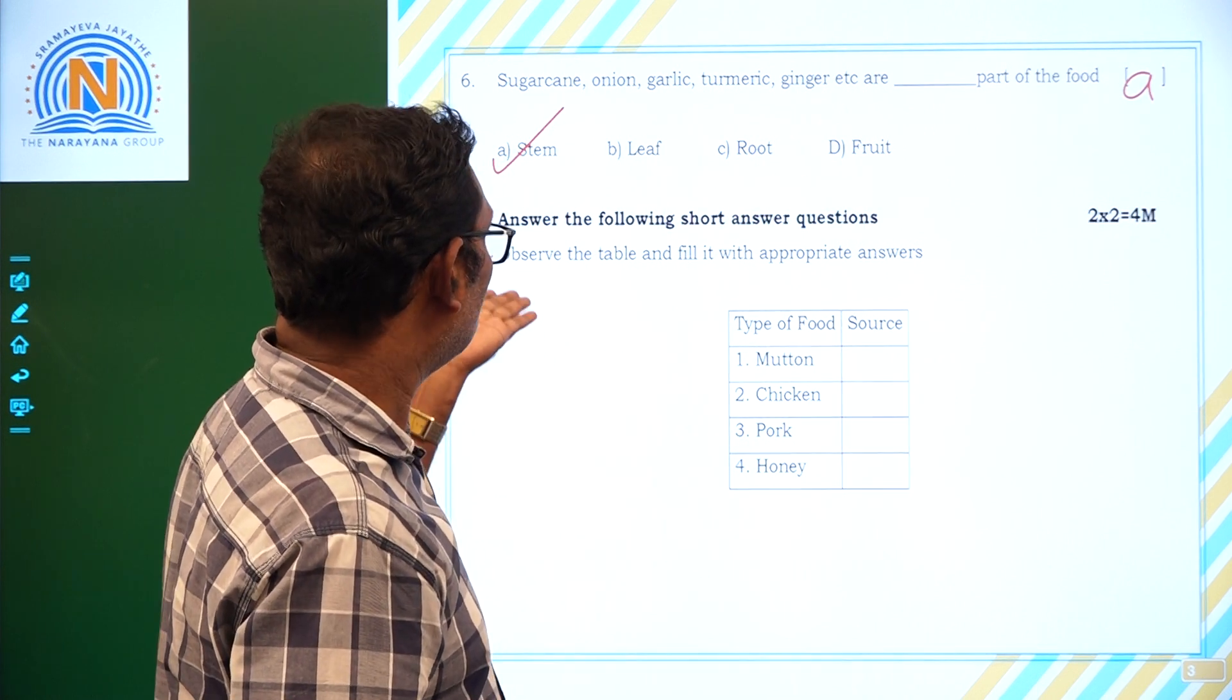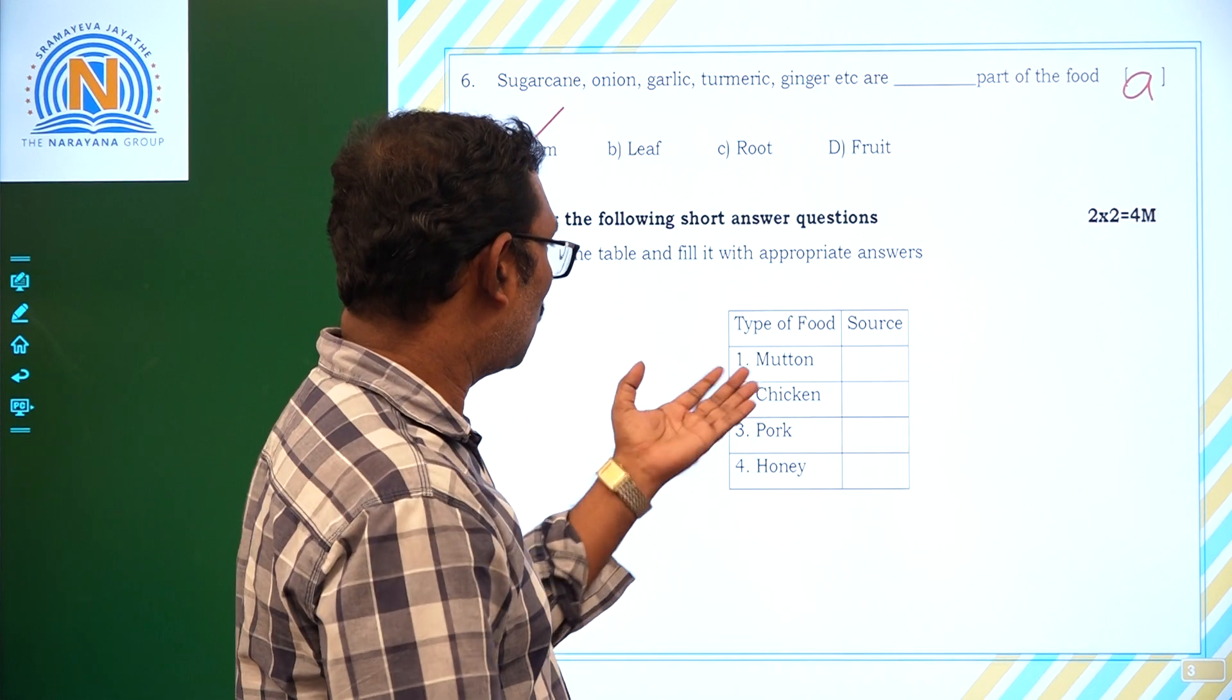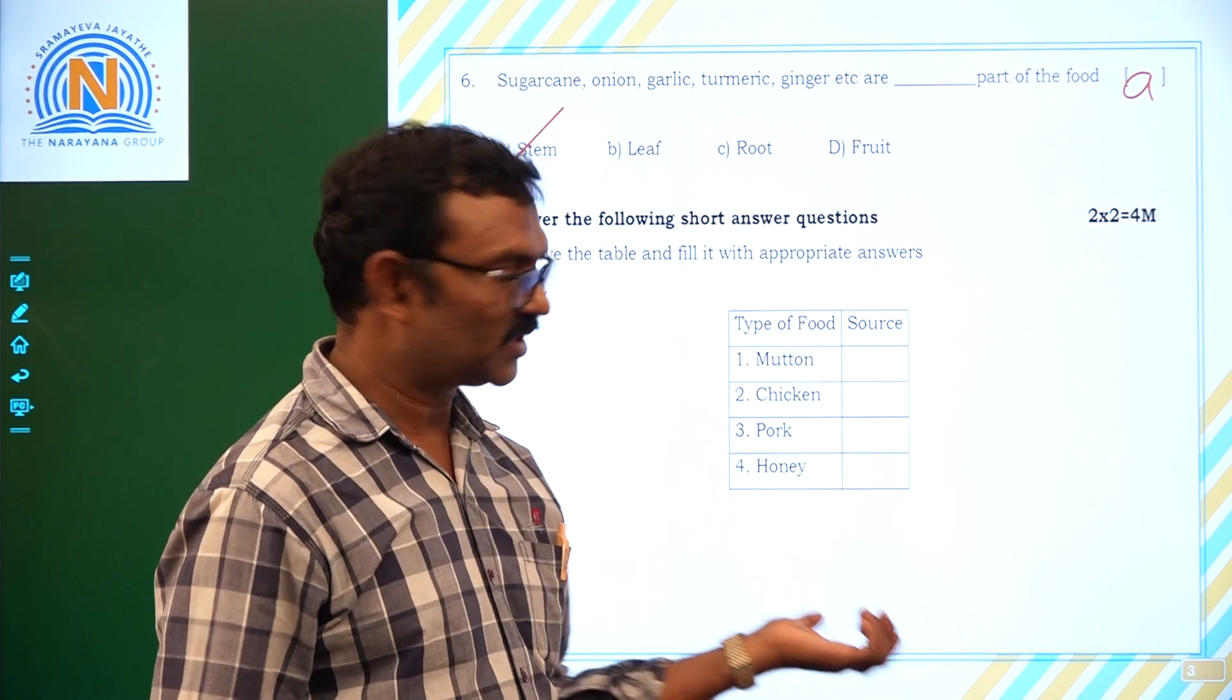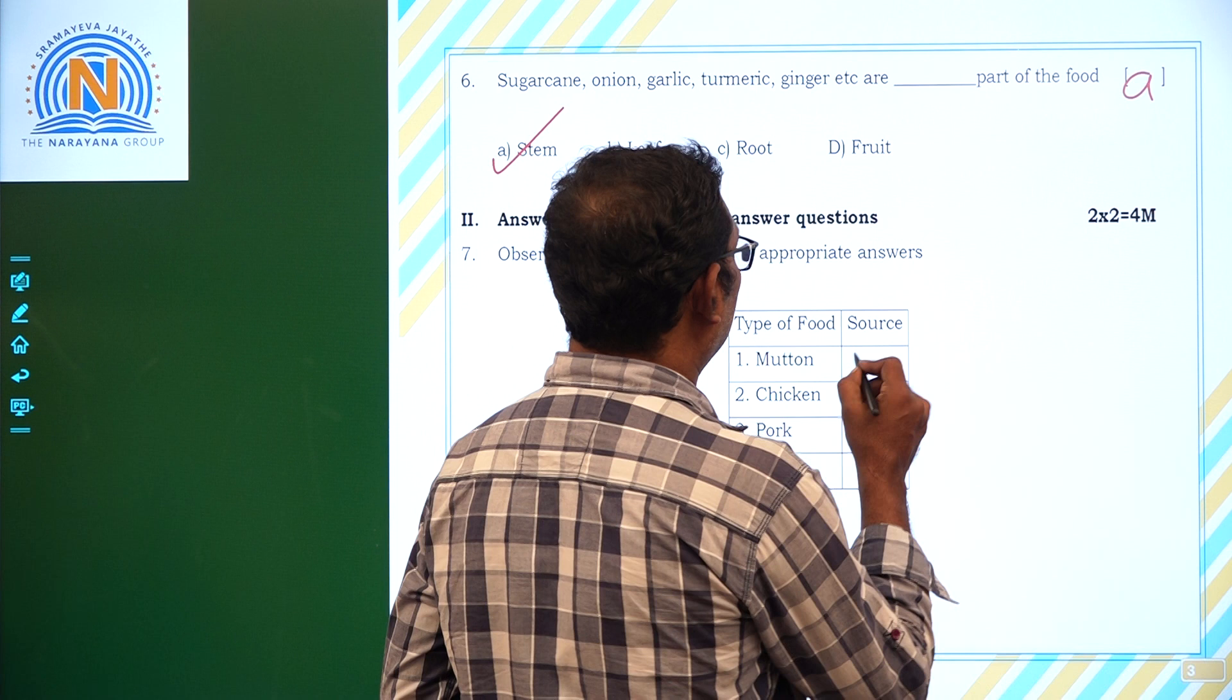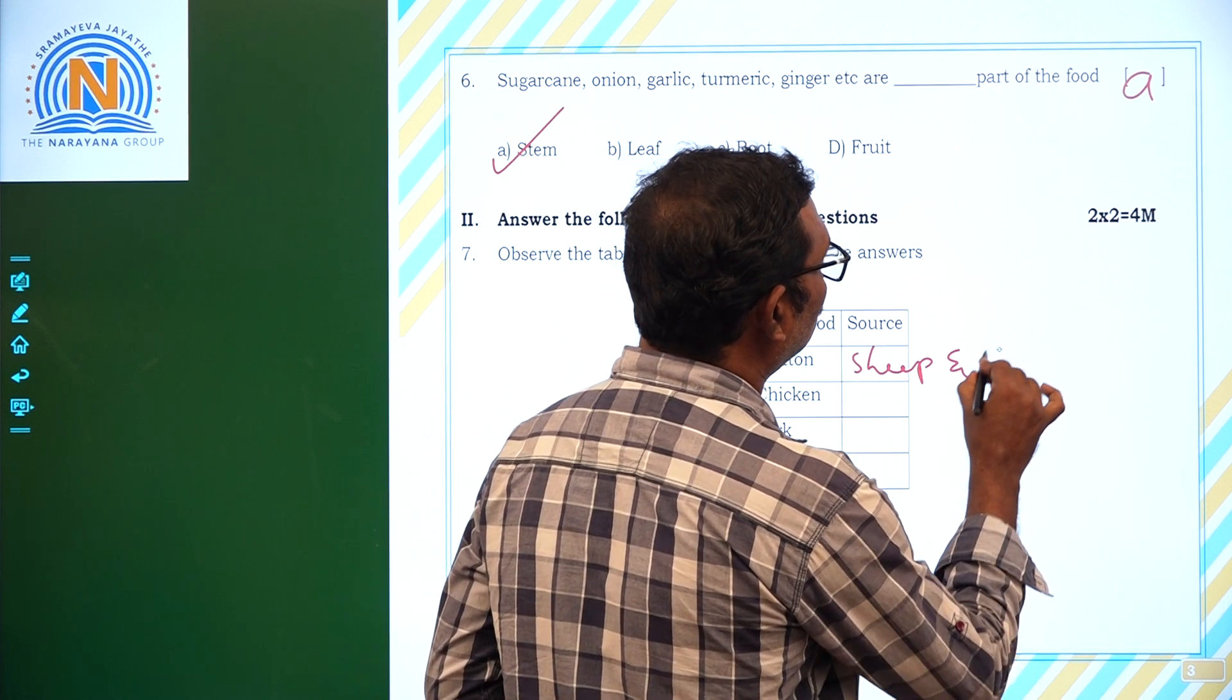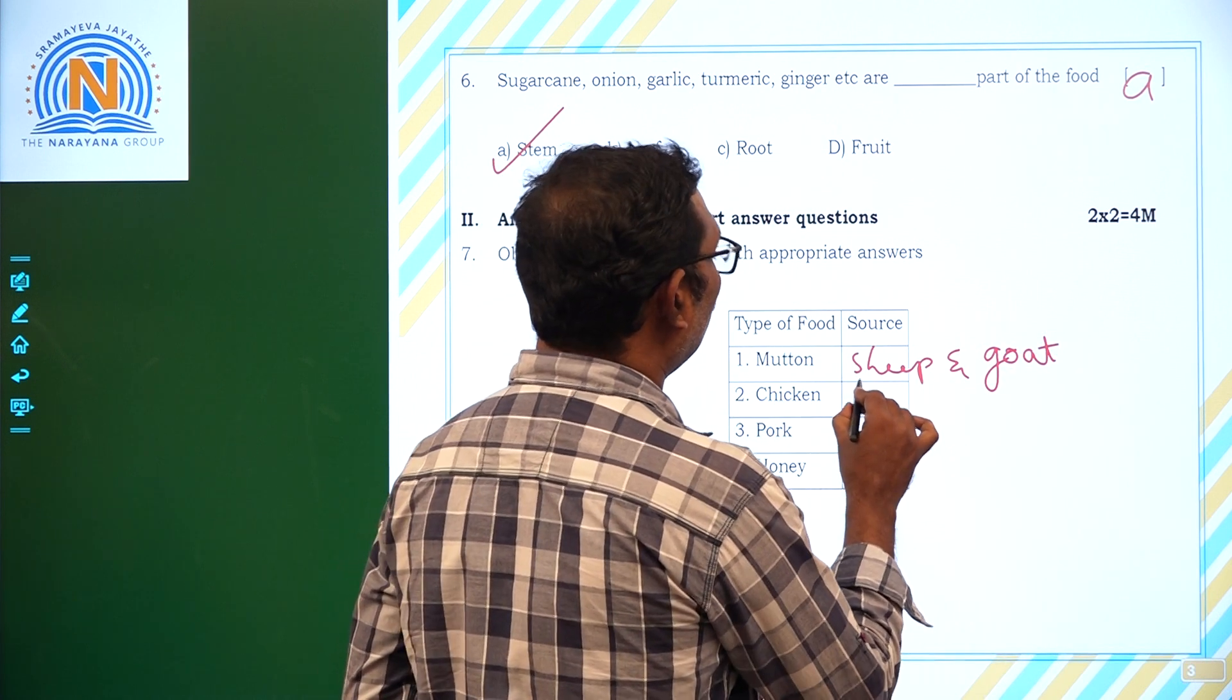Short answer questions. Observe the table and fill it with appropriate answers. Now table, observe this. Type of food once is given and source we have to write now. Mutton we get from source, what is source? Sheep and goat.